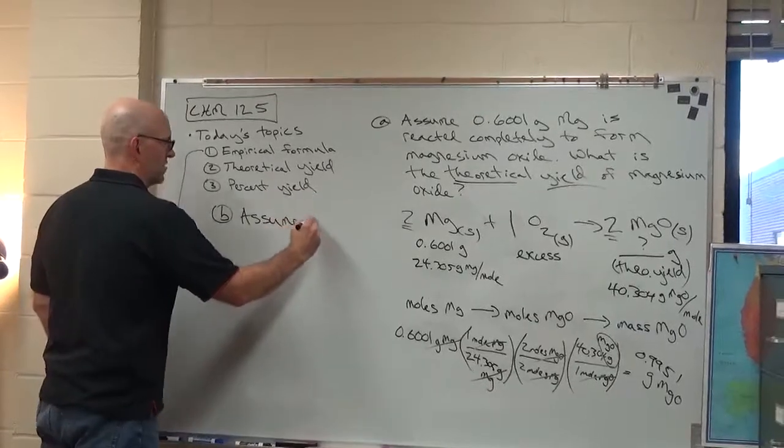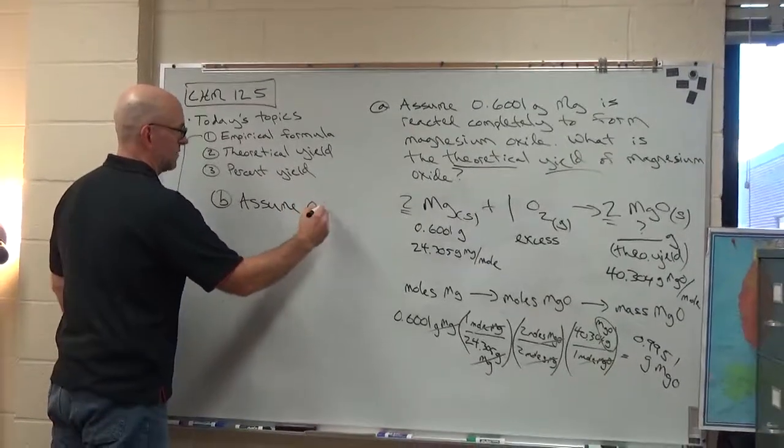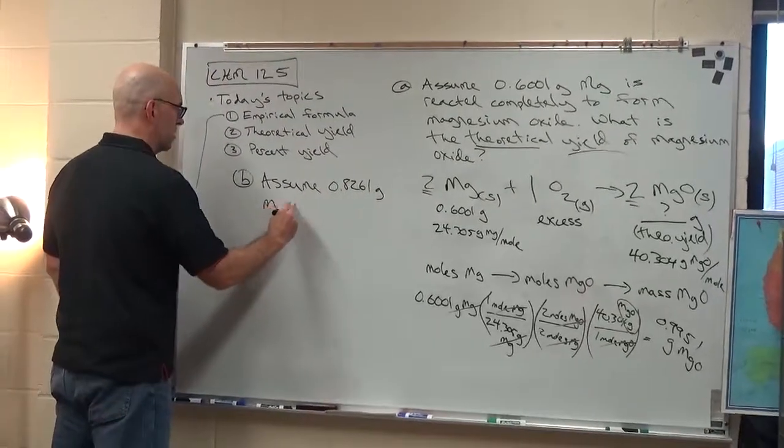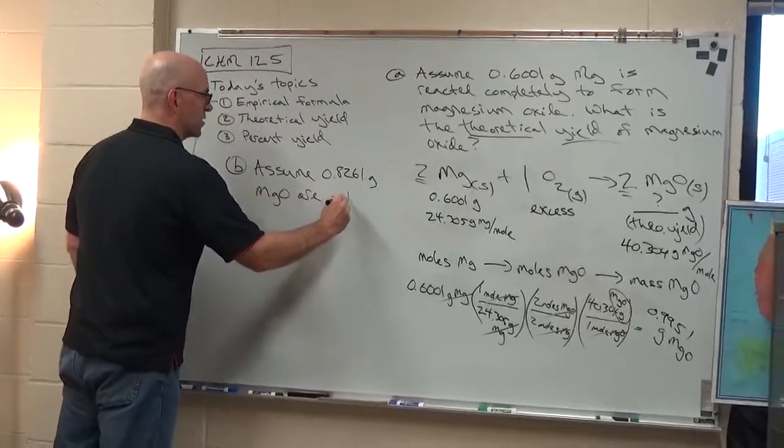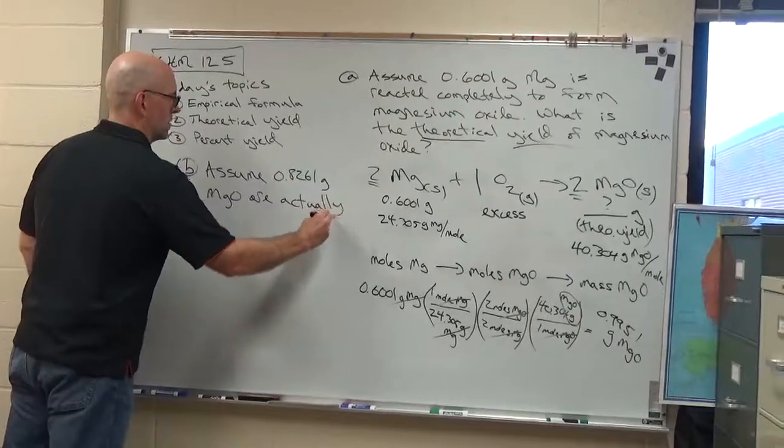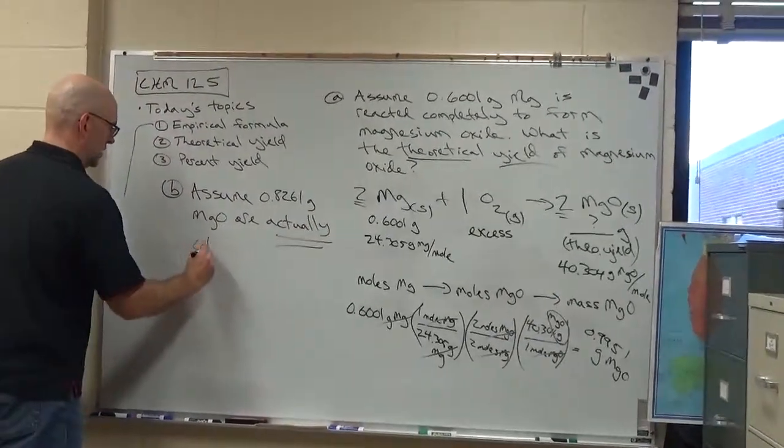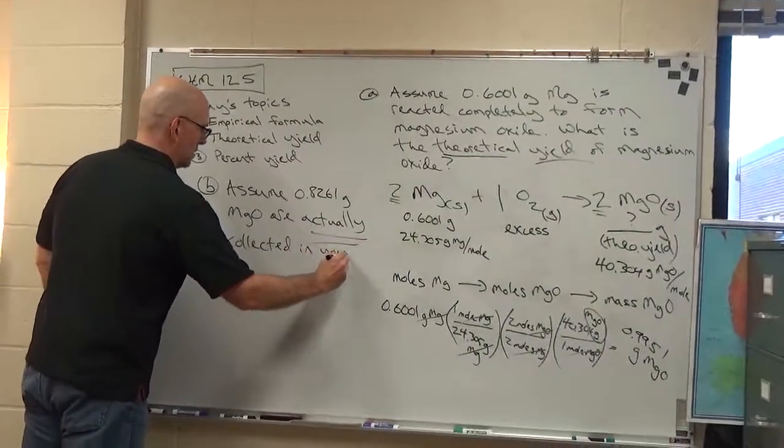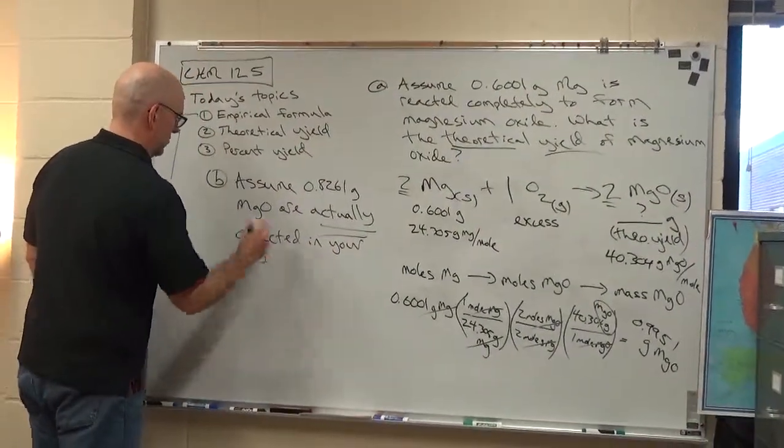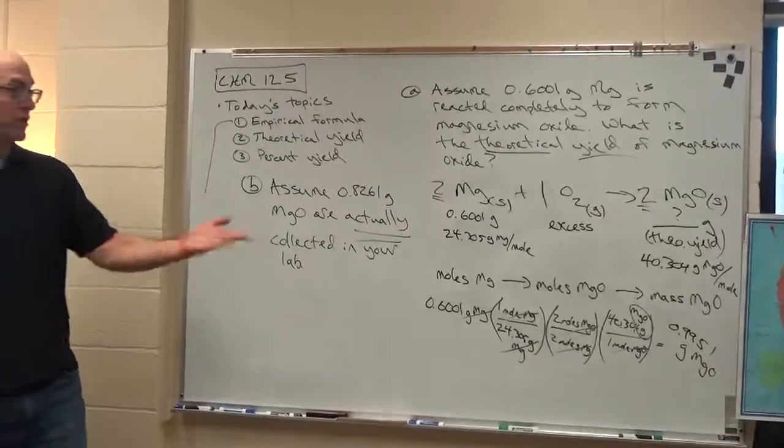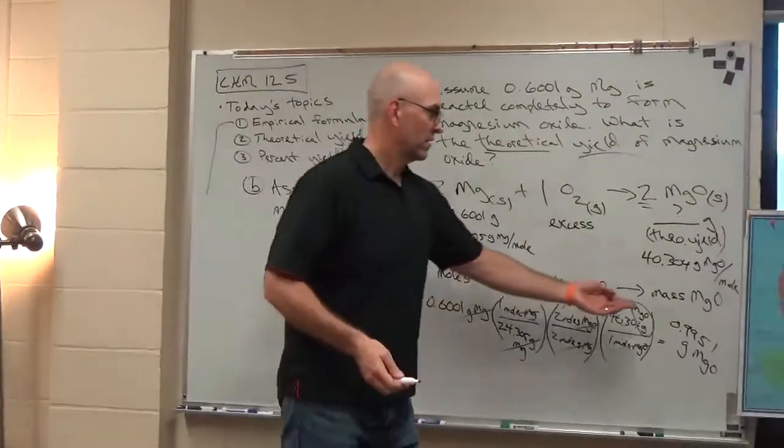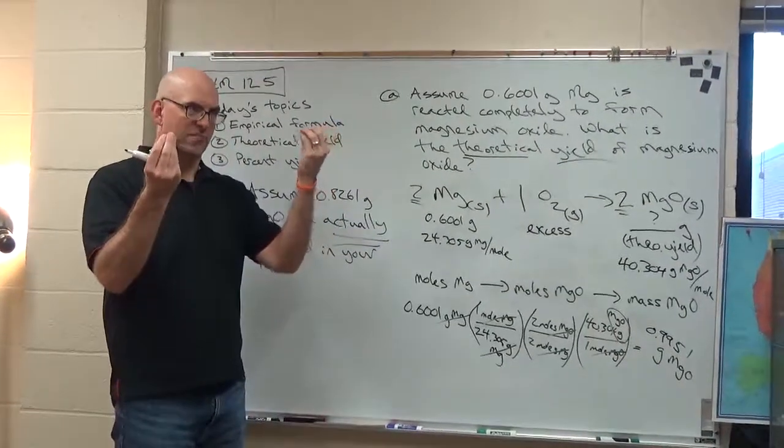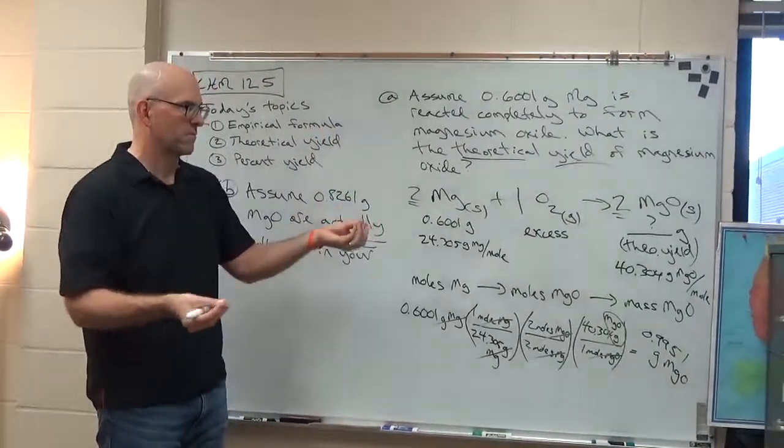Assume 0.8261 grams MgO are actually collected in your lab. Okay. So you didn't do the reaction perfect. Some of the MgO escaped because it's very fine particulate matter. It looks like smoke because I guess technically it is a type of smoke. So you lost some of it.